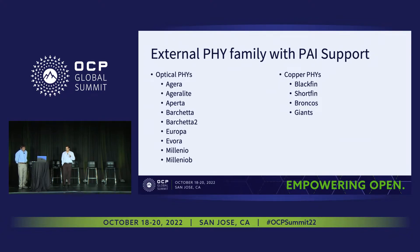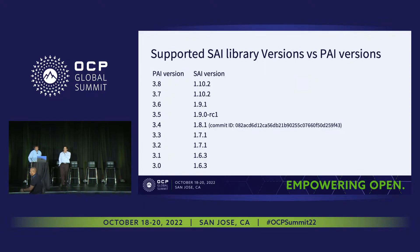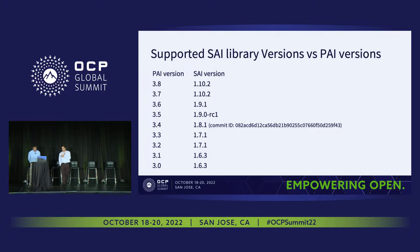In addition to optical PHYs, we have copper PHYs with PAI support: Blackfin, Shortfin, Broncos, and Giants. The PAI source code has a dependency on the SAI version — SAI header versions are integrated into the PAI source code, so whenever there is a change to SAI headers, we integrate that into the PAI source code and make a new release.